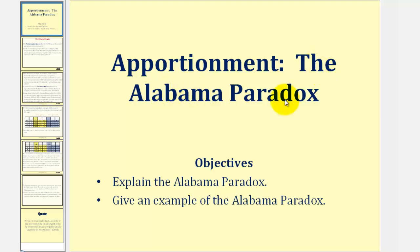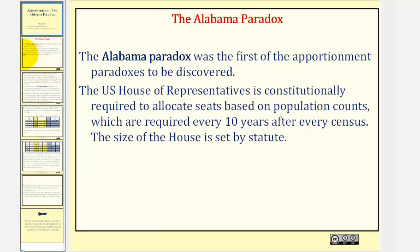Welcome to a lesson on the Alabama Paradox of Apportionment. The Alabama Paradox was the first of the apportionment paradoxes to be discovered. The U.S. House of Representatives is constitutionally required to allocate seats based upon population counts, which are required every 10 years after every census. The size of the house is set by statute.